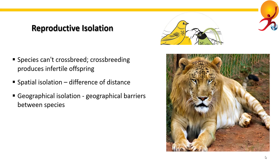Geographical isolation — if there is a physical barrier between two species such as a water body, mountain, or desert, it would prevent interbreeding between them and the process of natural selection would occur independently on both sides. A common example would be Darwin's finches, which we will come to soon.